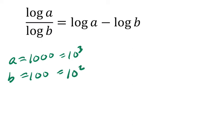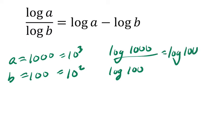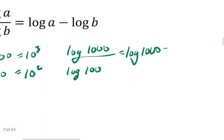So then if we set that up, we get the log of 1000 over the log of 100. And that's supposed to equal, according to this, the log of 1000 minus the log of 100.